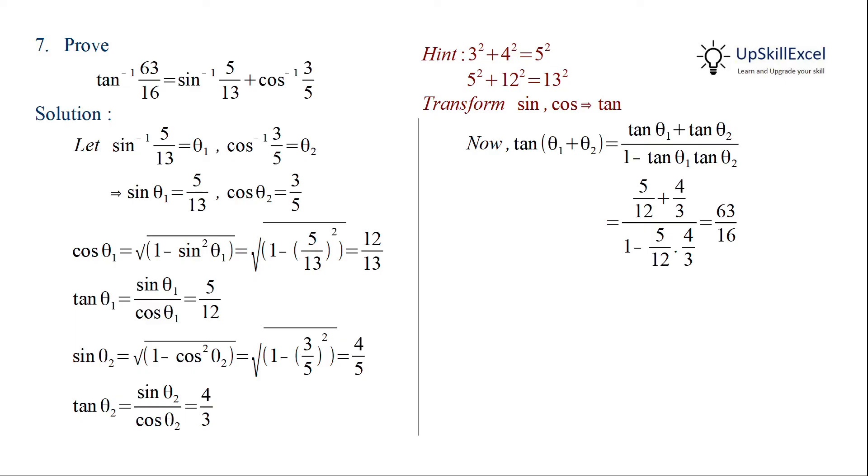Taking tan inverse on both sides we get theta 1 plus theta 2 is equal to tan inverse of 63 by 16. Theta 1 and theta 2 we can substitute from our assumption to get tan inverse 63 by 16 is equal to sin inverse 5 by 13 plus cos inverse 3 by 5.